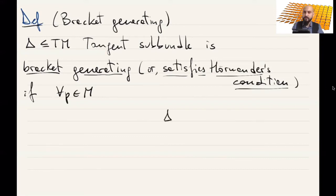What does it mean? If you fix a point p, then what you do, you have delta. Then you look at the vector fields tangent to delta, sub-bundle fields. Then of this family, you can see all the possible brackets and linear combinations. In other words, you consider the Lie algebra generated.